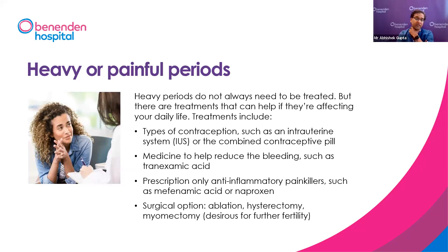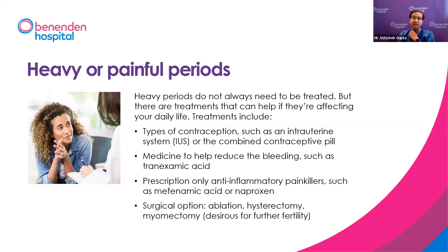This can be treated with a simple medication called tranexamic acid, which helps change the molecular-level clotting mechanism in your womb. It can be prescribed by your GP and is a non-hormonal medication, taken only on the heavy days of your period. It doesn't stop you getting pregnant. It can be combined with mefenamic acid or other anti-inflammatories like naproxen during your period — they work in synergy together to help reduce heaviness and give better pain control. Again, this needs to be taken only on the heavy days.